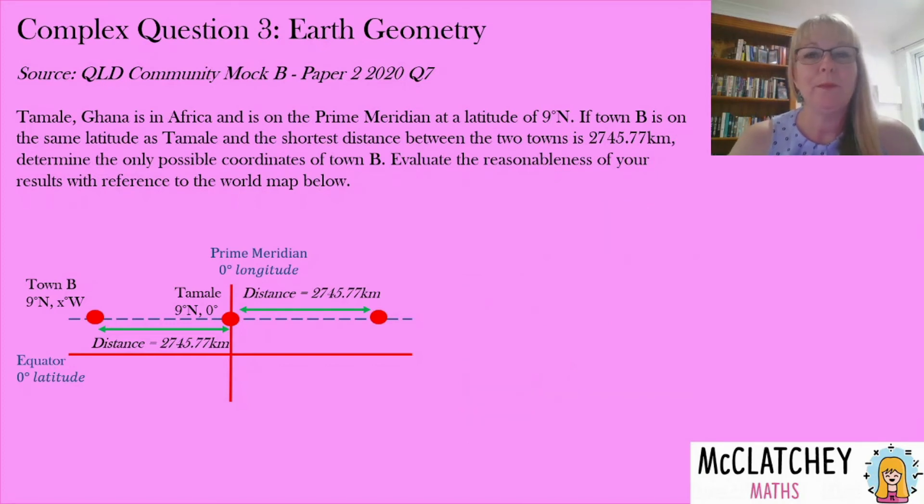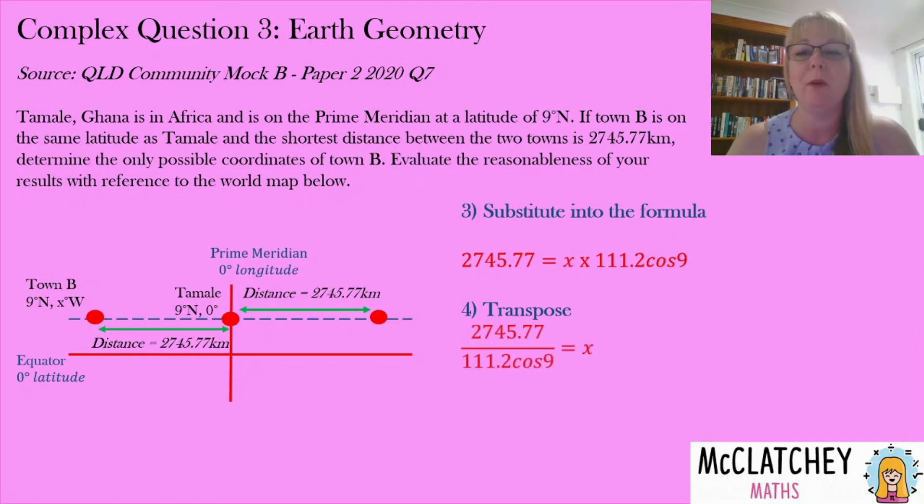Okay so now we need to do some maths. Okay we're going to substitute those variables into our formula. We now know that that distance is going to be the subject of our equation and we need to do some transposing and hopefully your algebra is not too bad and you'll be able to do this without any problems. We're going to divide both sides by 111.2 cosine of nine because that's going to be a number when we plug that into our calculator.